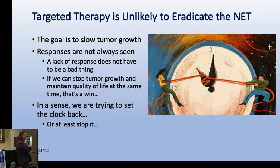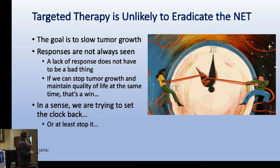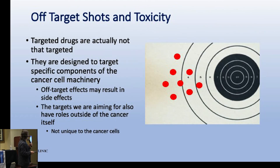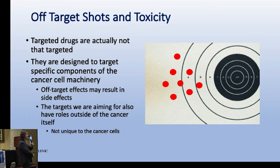Targeted therapy is very unlikely, at least currently, to eradicate the tumor completely. What we're trying to do is slow tumor growth, shrink tumors to relieve symptoms - really trying to set the clock back or at least stop it from moving. The targeted therapy often misses the mark too, hitting things that are not necessarily the target, including normal tissues.